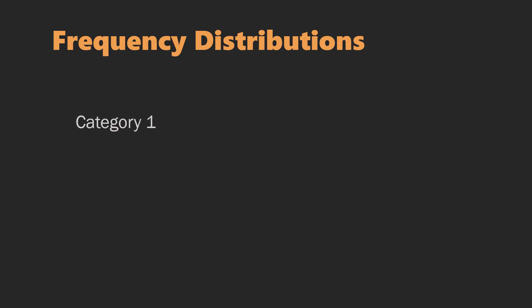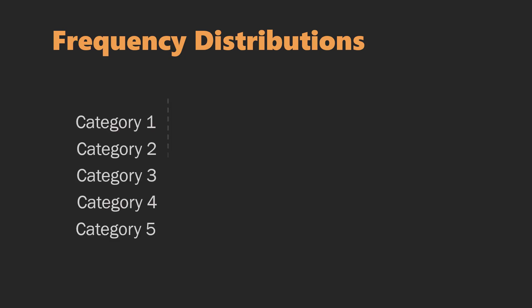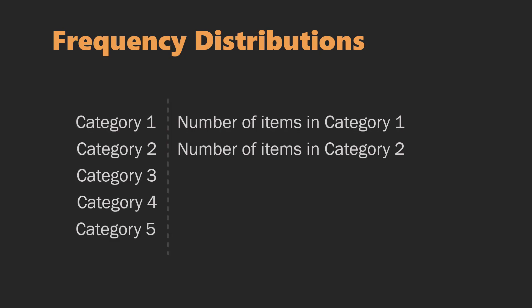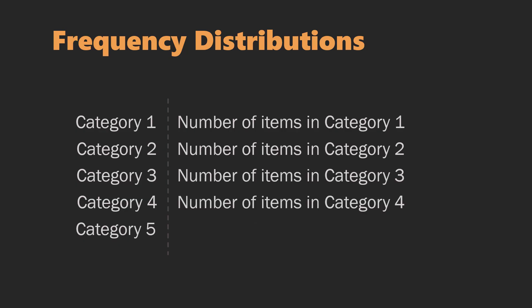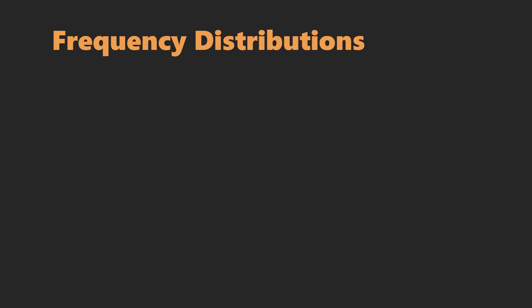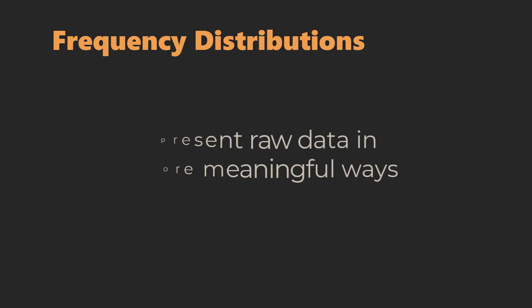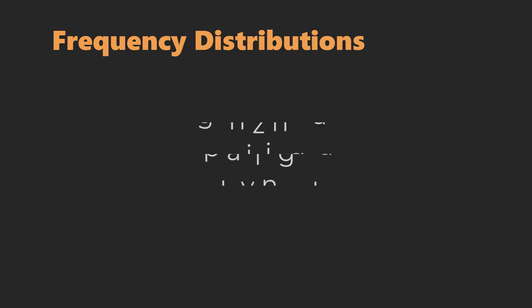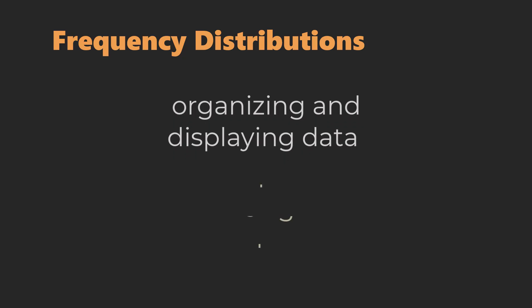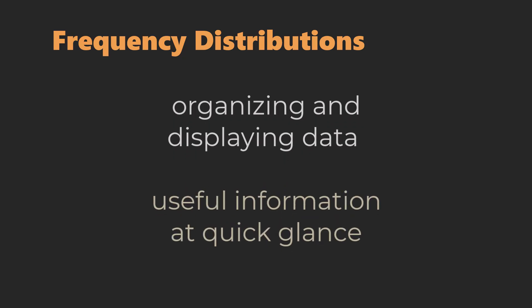A frequency distribution of a data set is a display of its distinct categories along with the number of observations in each category. The goal of creating frequency distributions is to present raw data in more meaningful ways, involving organizing and displaying data so we can derive useful information at a quick glance.